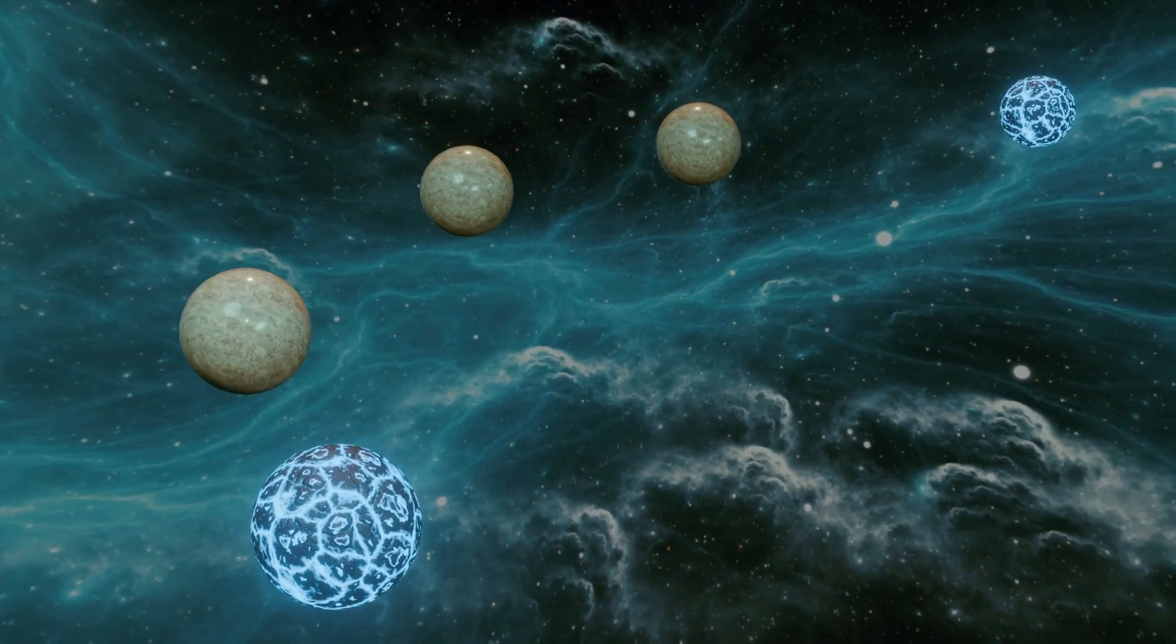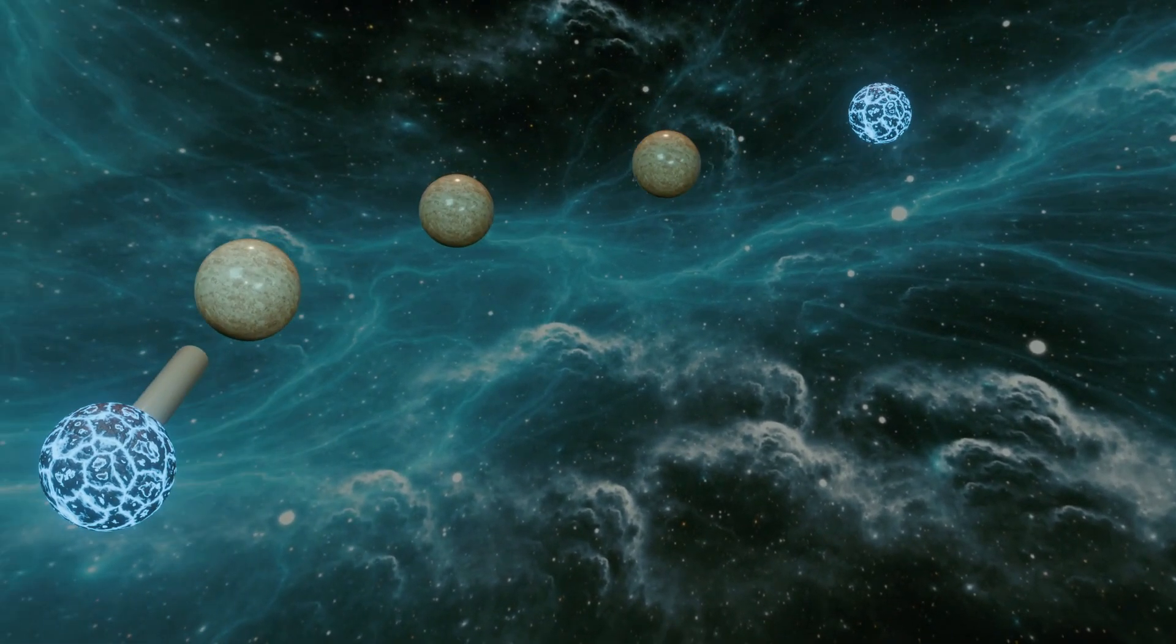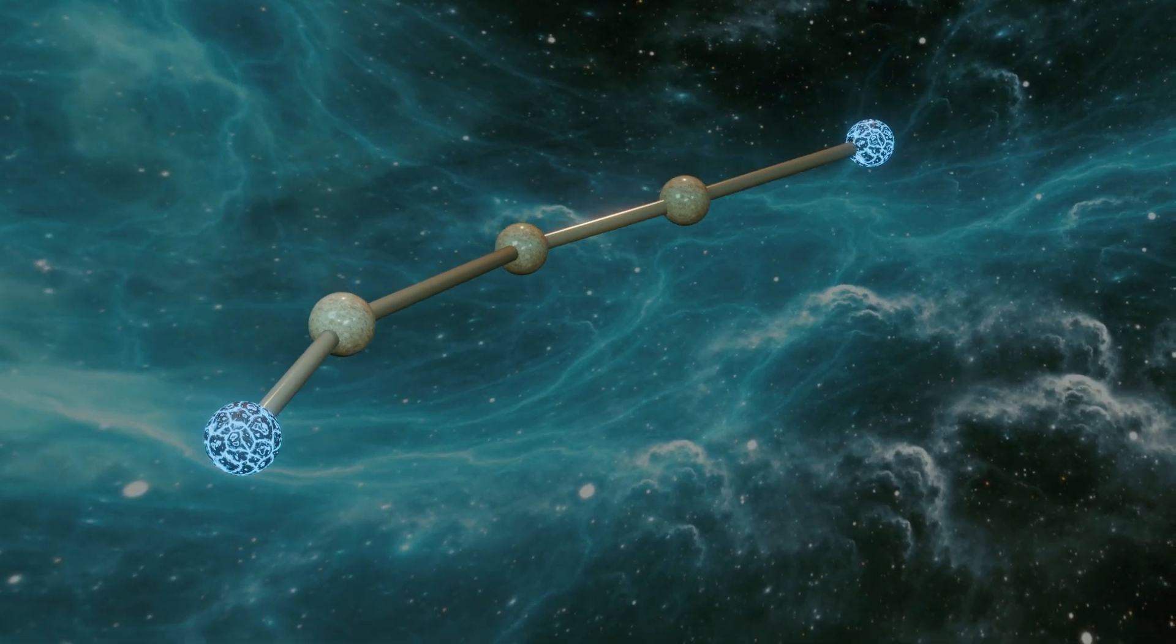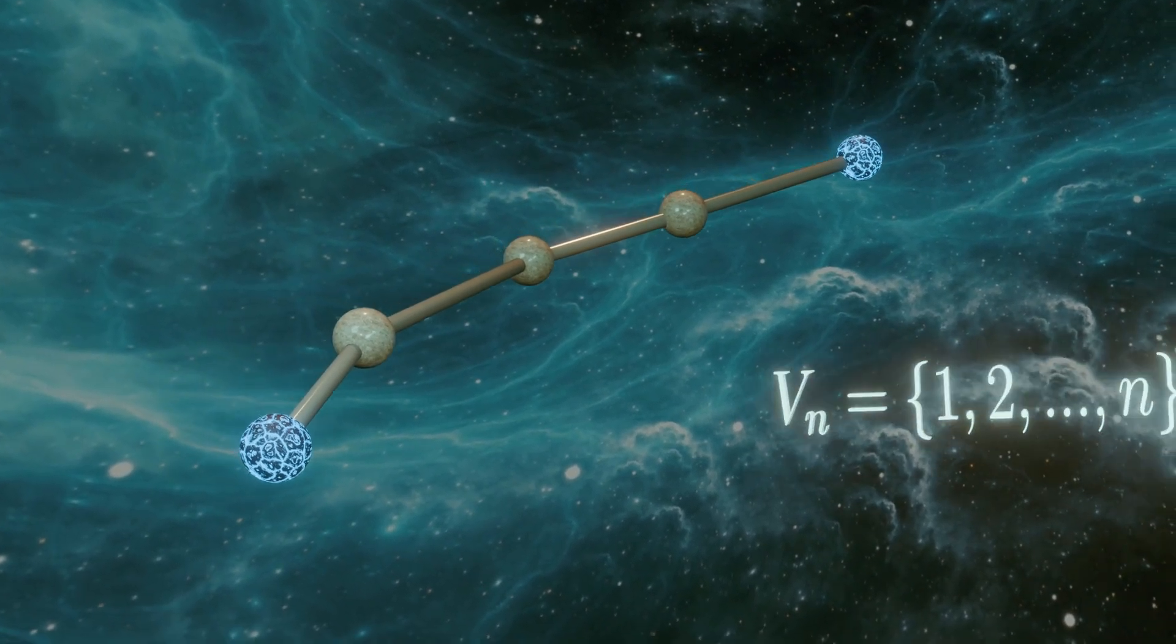First, I'll define what it means to say a graph itself is a path, and then what it means to say that a graph contains a path between two of its vertices. So if a graph has n nodes, and they can be ordered 1 to n,